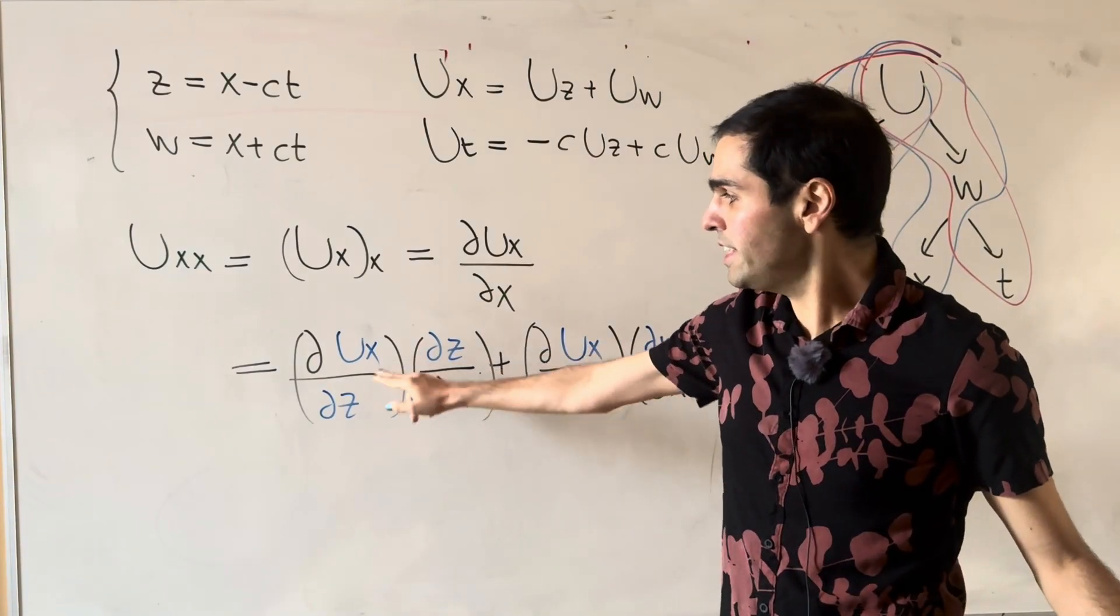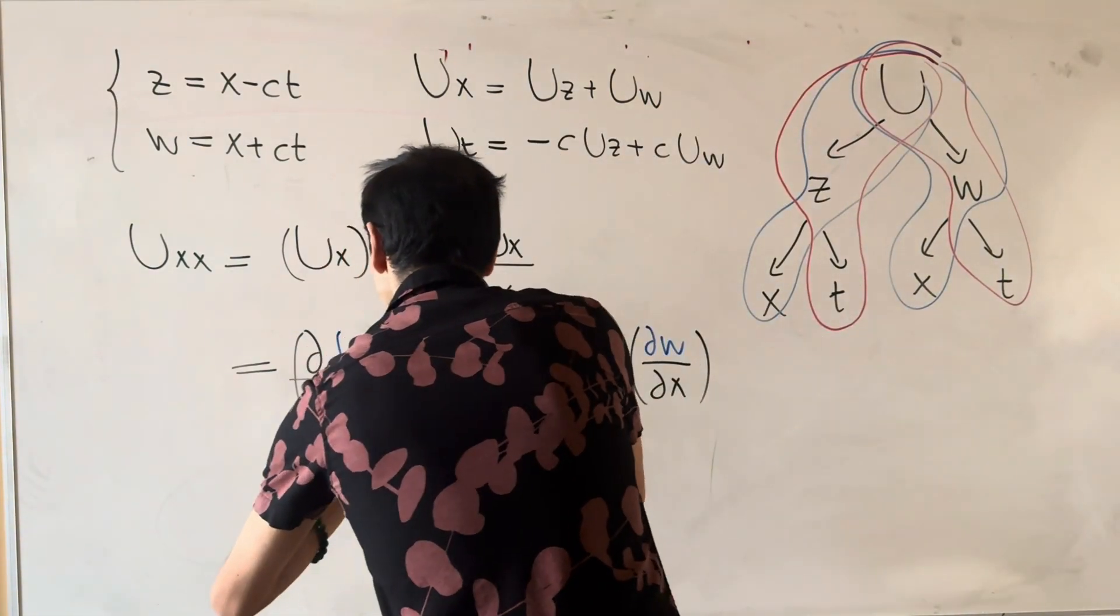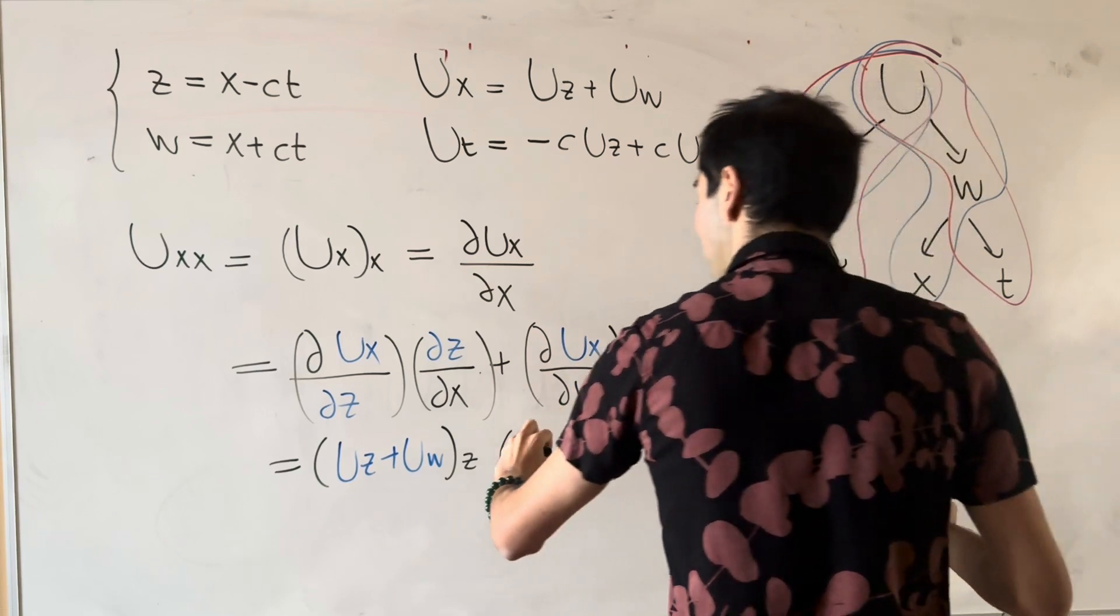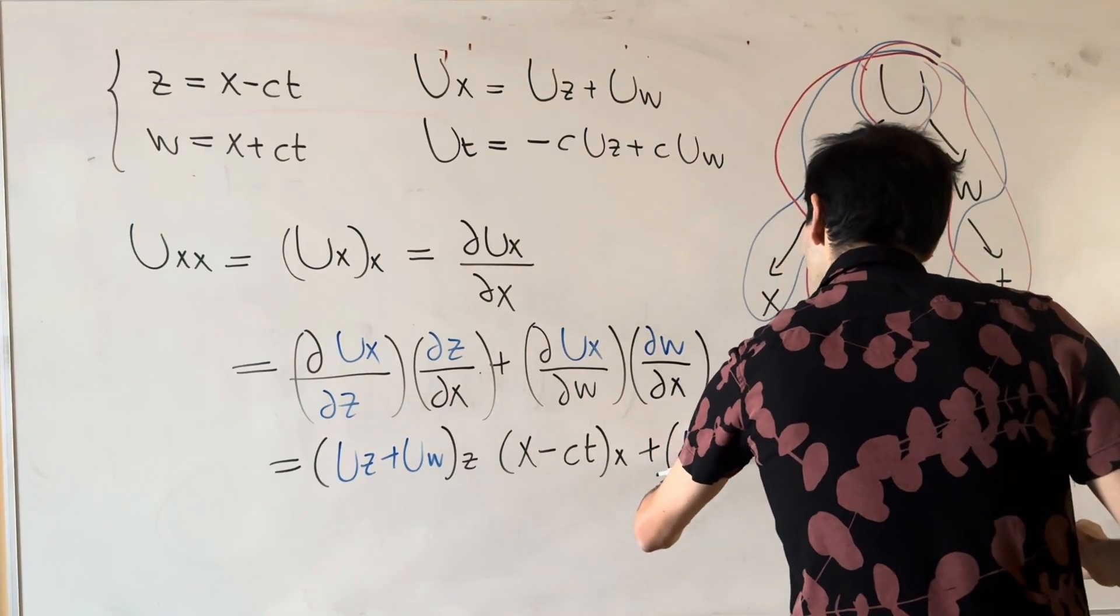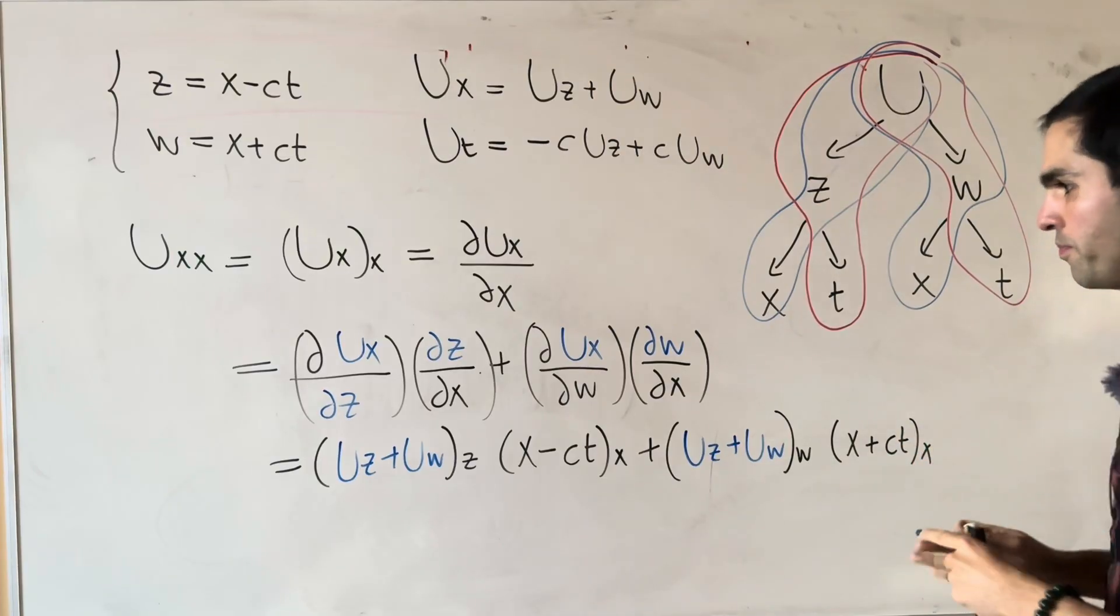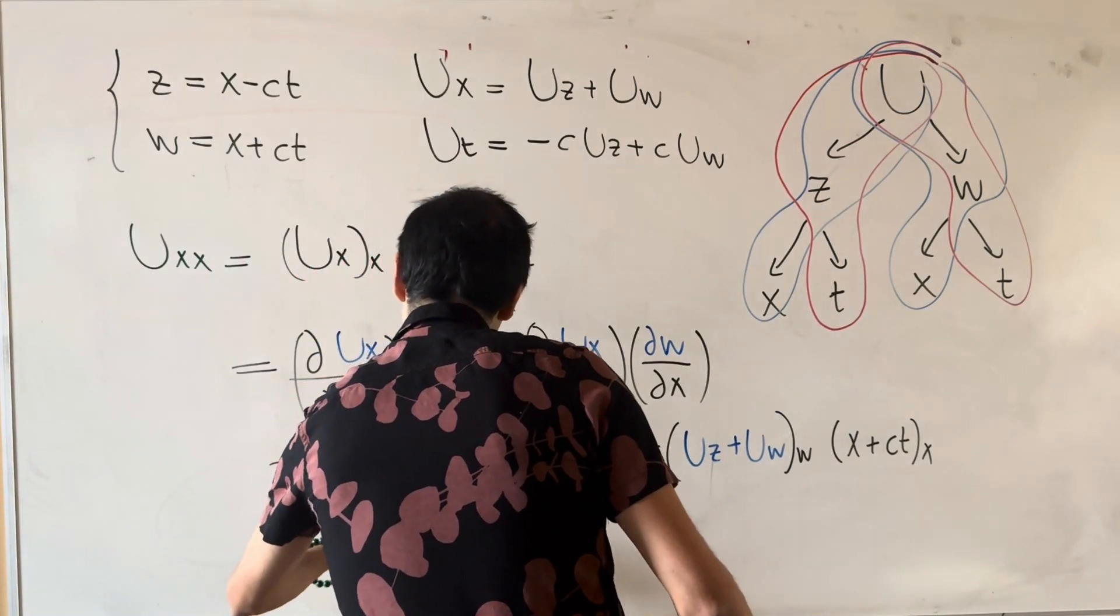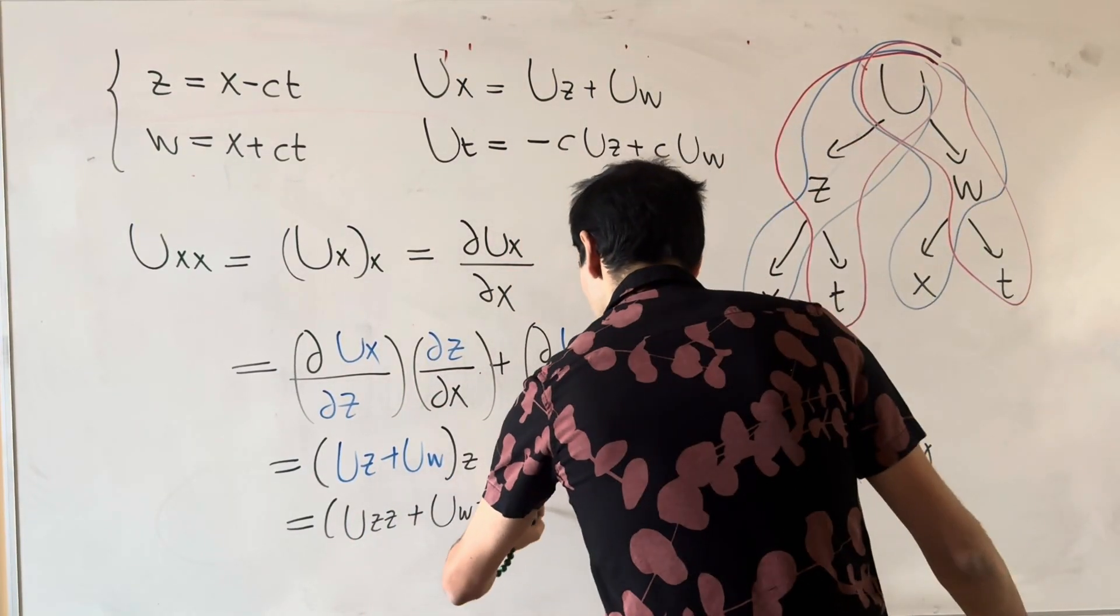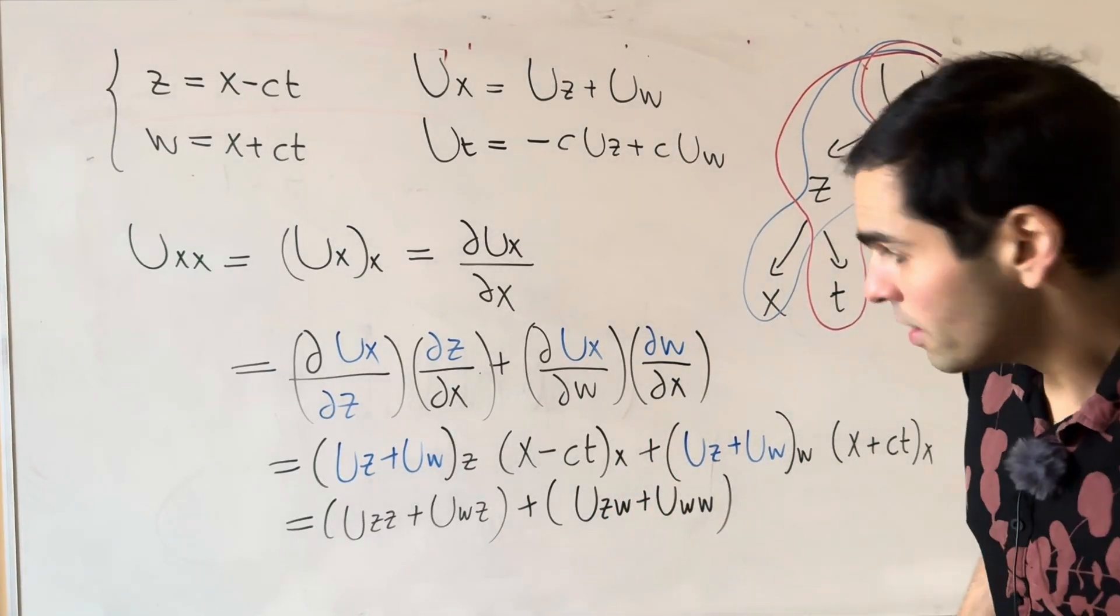All right, and now to calculate this, so dU_x over dz, remember U_x is U_z plus U_w. So this is really the same thing as U_z plus U_w. Now with respect to z, z is x minus ct with respect to x. And then same thing here, U_z plus U_w with respect to w, and then x plus ct with respect to x. So in the end, what do we get? So this becomes U_zz plus U_wz times 1, so ignore that, and then plus U_zw plus U_ww, and then times 1.